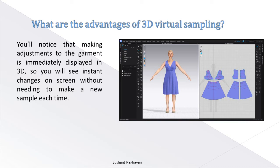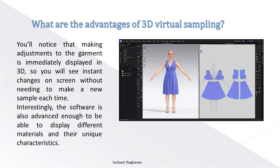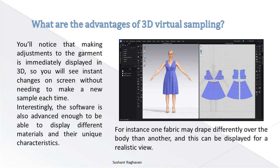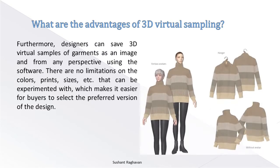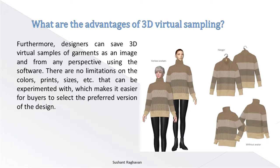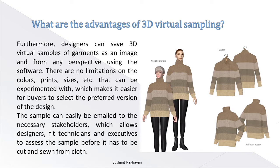You will notice that making adjustments to the garment is immediately displayed in 3D, so you will see instant changes on screen without needing to make a new sample each time. The software is also advanced enough to display different materials and their unique characteristics — for instance, one fabric may drape differently over the body than another, and this can be displayed for a realistic view. Furthermore, designers can save 3D virtual samples of garments as an image from any perspective. There are no limitations on the colors, prints, sizes, etc. that can be experimented with, which makes it easier for buyers to select the preferred version of the design. The sample can easily be emailed to the necessary stakeholders, allowing designers, fit technicians, and executives to assess the sample before it has to be cut and sewn from cloth.